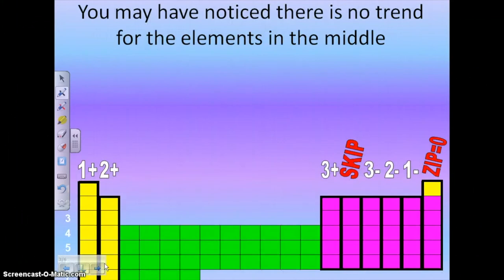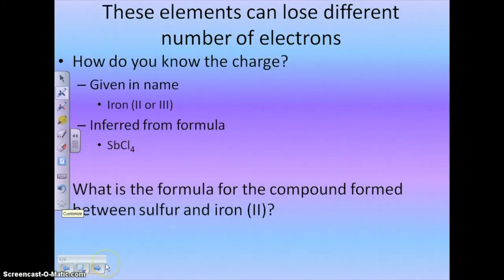Let's look at the next thing. So you may have noticed by now that there's no trends for the elements in the middle. So we have this trend, 1 plus 2 plus 3 plus skip, 3 minus 2 minus 1 minus zip. We have no trend for these middle elements at all. So how do we figure out their charges?